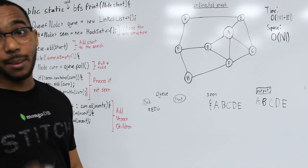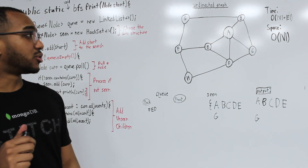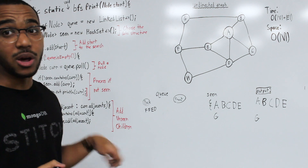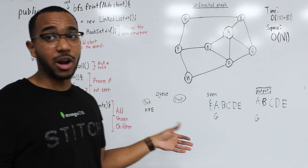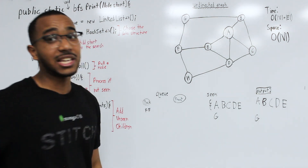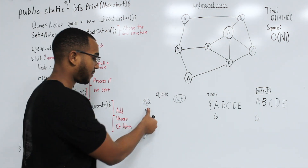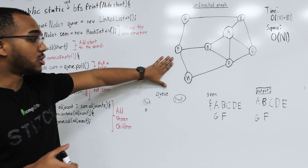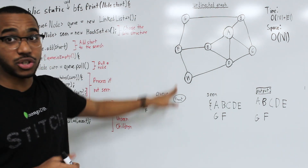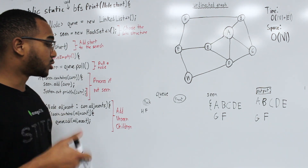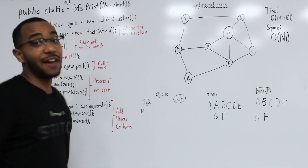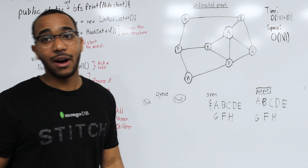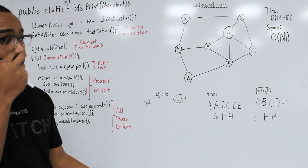We pull E — already seen and processed, nothing happens. We pull F — not yet seen and processed, so we process it and add its children G and H. G has been seen; H has not, so we add H. We pull F again from the queue — already seen and processed, nothing happens. Finally we pull H — not seen and processed, so we process it. Our queue is now empty and we have processed all eight nodes.